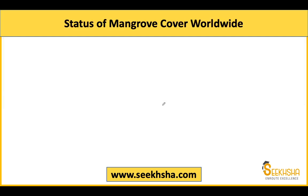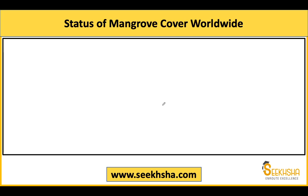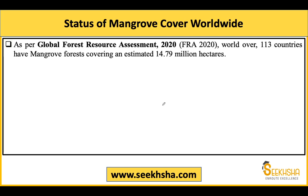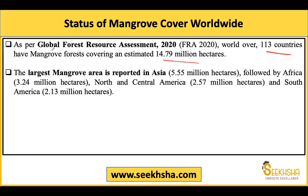Ye sare naam jo likhe hain, aapko yaad hone chahiye ki ye mangroves ke andar hain. Mangroves cover ka status: puri duniya mein Global Forest Resource Assessment 2020 ke anushaar, 113 desh hain jinke paas mangroves forest hai, aur around 14.79 million hectare jagah cover karte hain ye pure world mein. Largest mangroves area Asia ke andar hai - around 5.5 million hectare.